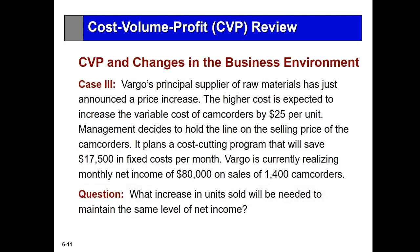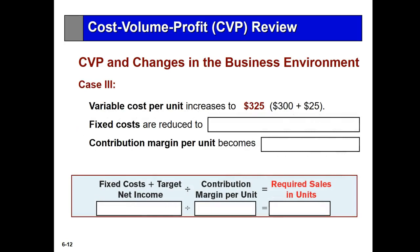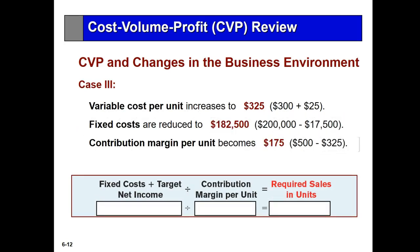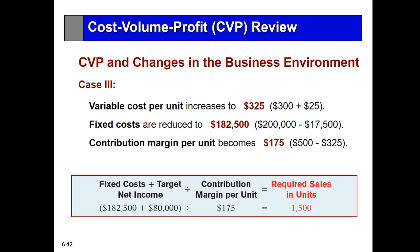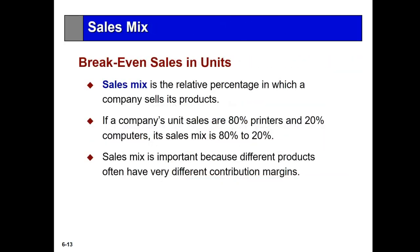In scenario three, a supplier announces a price increase expected to raise variable costs by $25. Management decides to hold the line on selling price and plans a cost-cutting program saving $17,500 per month. We are already making $80,000 per month on sales of 1,400 camcorders. The variable cost increases to $325, fixed costs are reduced, and the contribution margin is now $175. To cover fixed costs and achieve a target net income of $80,000 at $175 contribution margin per unit, required sales are 1,500 units. That's how we use CVP with a changing business environment.